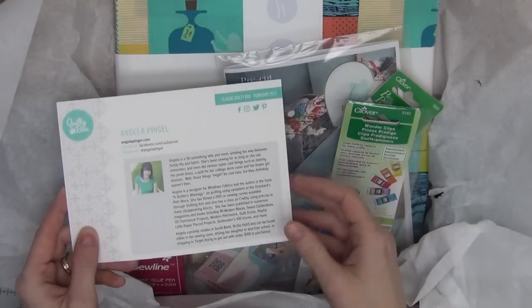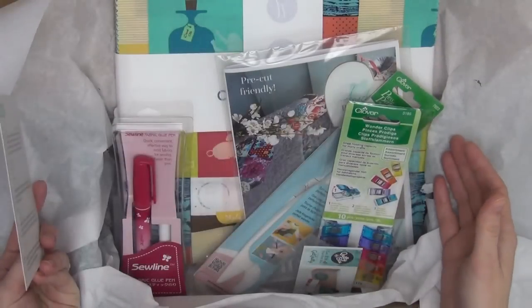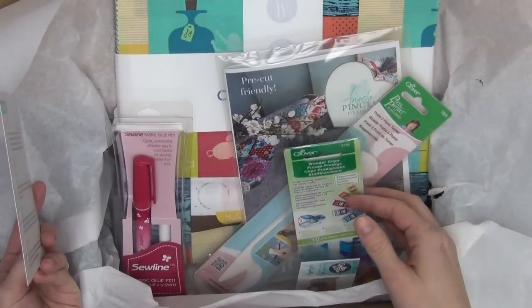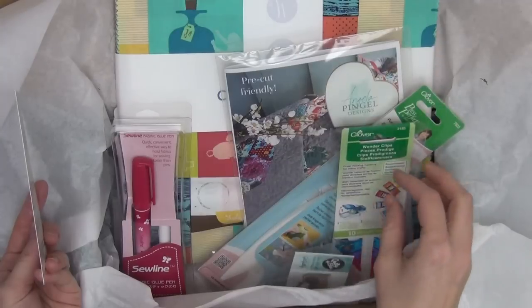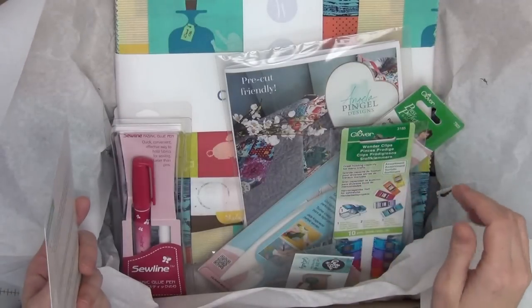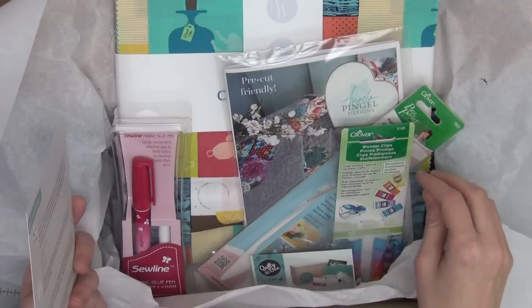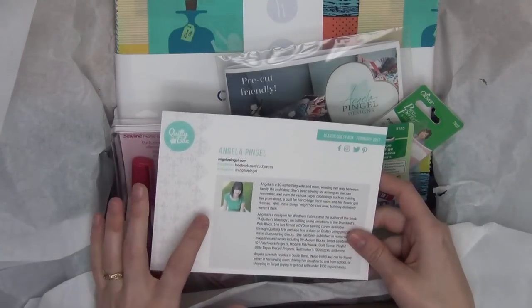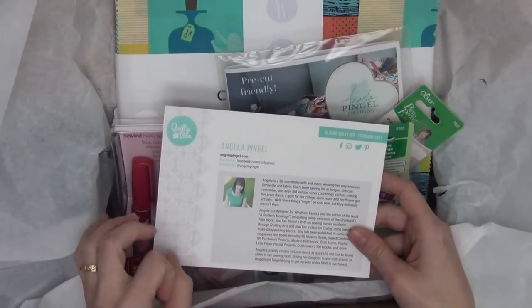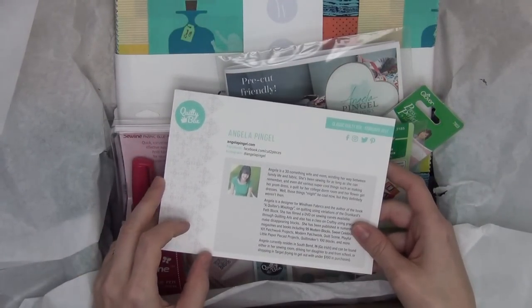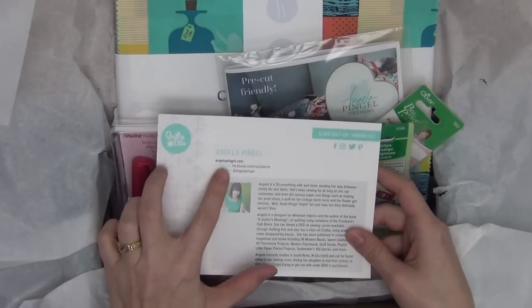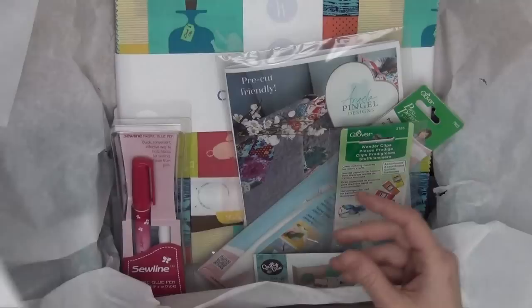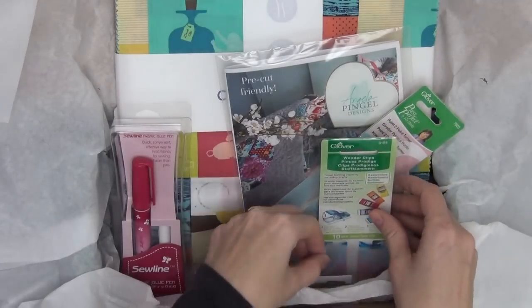So just in case you've never heard of Quilty Box, basically this is a box of fun gear that arrives every month and it's filled with tools, supplies, and usually fabric and some thread. So it's always a real adventure to see what's coming in each box. And each box is picked by one person, and this month it's Angela Pingal and you can check out her website at AngelaPingal.com. So let's check out what we've got in this month's box.